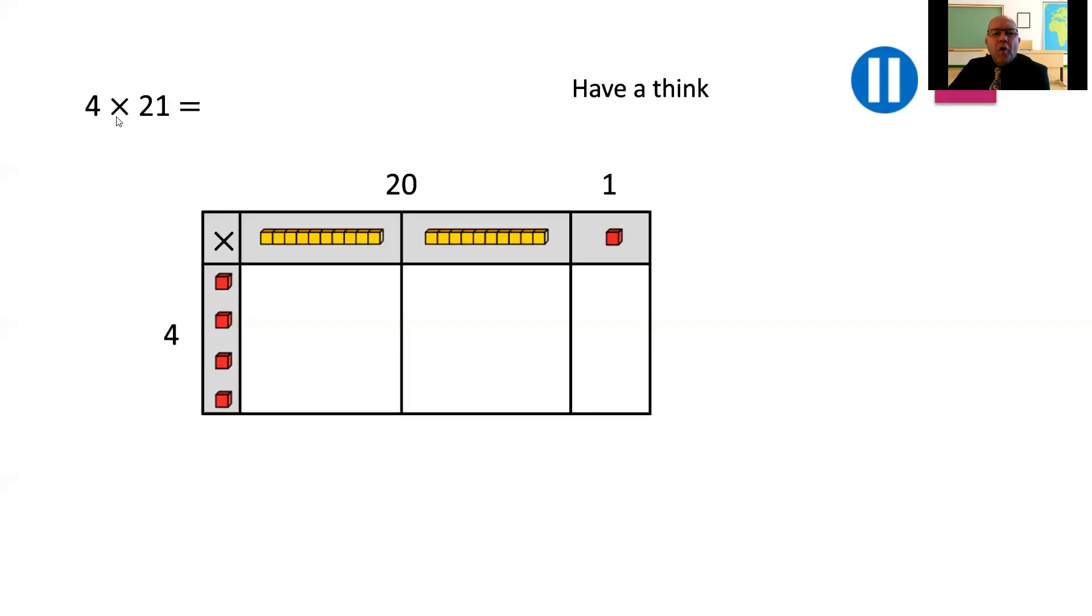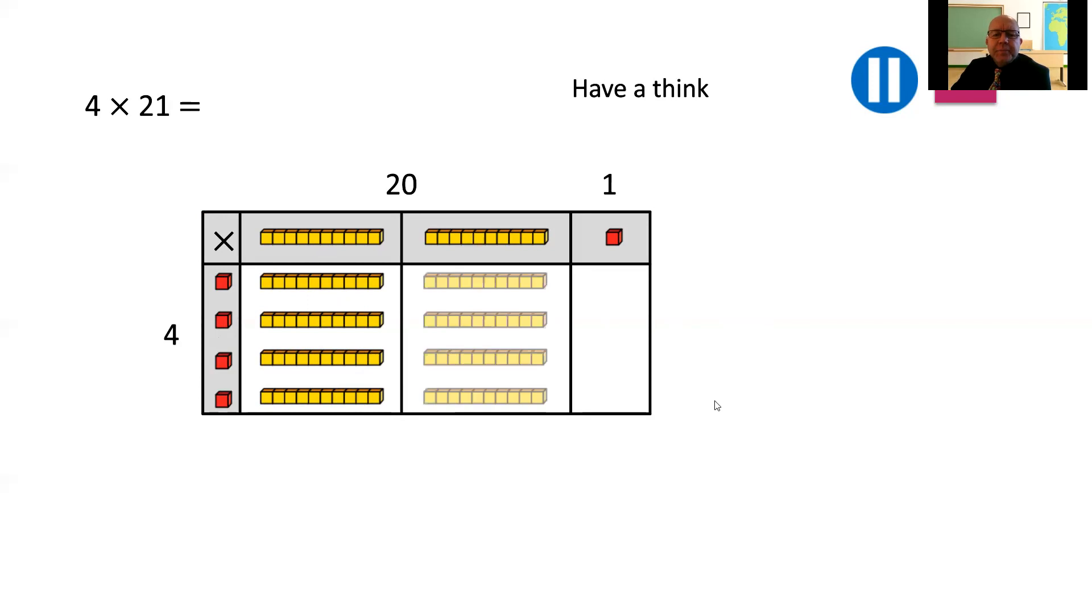All right. Here's another one. 4 times 21. So we've got our 4 here. And we've partitioned our 21 into 20 and 1. We've got our 2 tens to make our 20. And we've got our 1 here. Have a think now, working through what the answer for this is going to be. Let's take a look. As we work our way through, we need 4 lots of 10 here. We need another 4 lots of 10 here. And finally, 4 lots of 1. So all together, we've got 10, 20, 30, 40, 50, 60, 70, 80, and 1, 2, 3, 4. 84 all together.